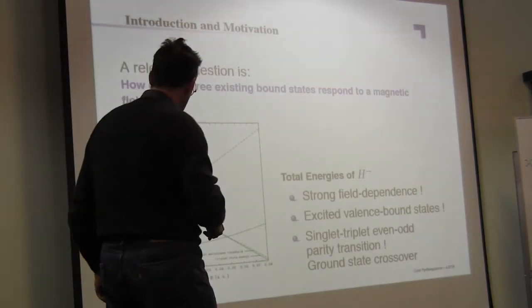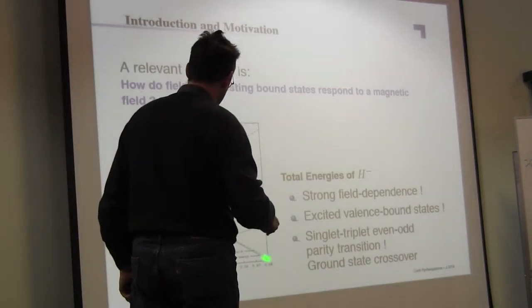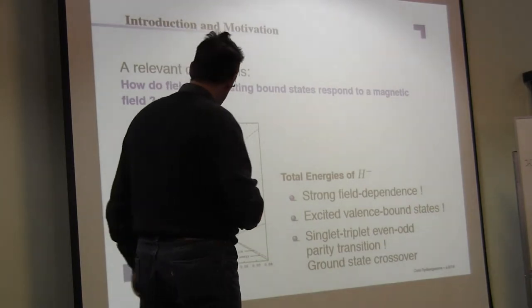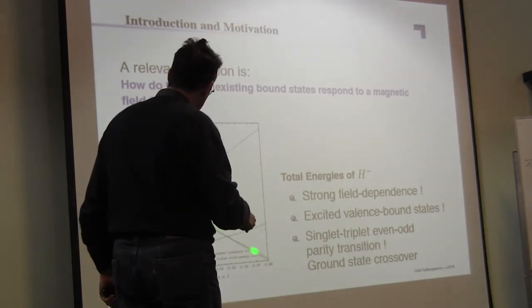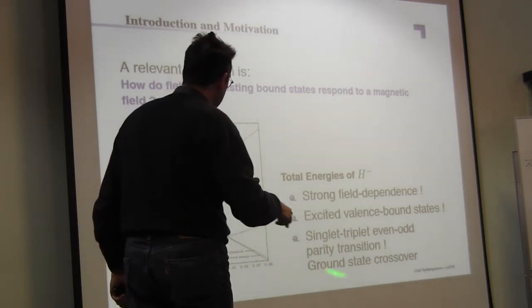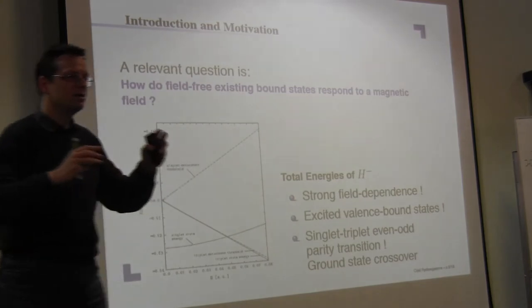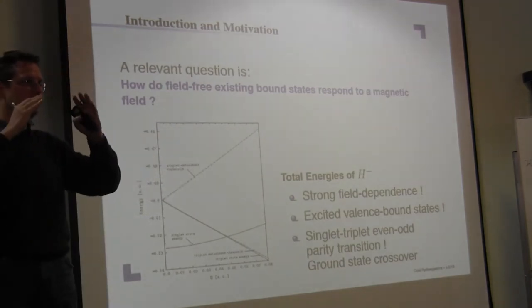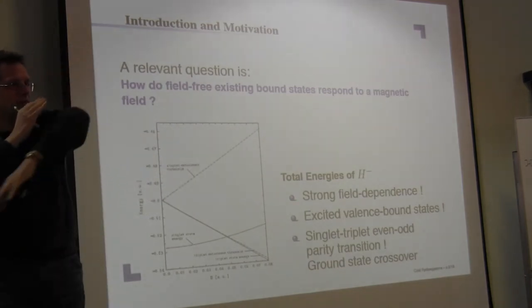Here you see strong magnetic fields, hundreds of thousands of Teslas, and you see that the singlet energy is coming down and the triplet energy is going up. So that means you have a ground state crossover with increasing magnetic field.